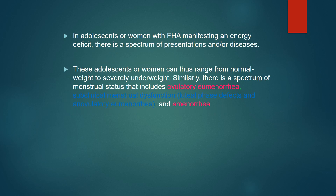In adolescents or women with FHA manifesting an energy deficit, there is a spectrum of presentations and diseases. Adolescents or women can range from normal weight to severely underweight. Similarly, there is a spectrum of menstrual status that includes anovulatory amenorrhea, oligomenorrhea, and subclinical menstrual dysfunction, luteal phase defects, and anovulatory dysmenorrhea or amenorrhea.